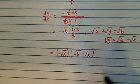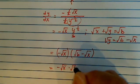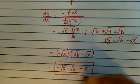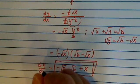One more step, then we're done. Radical x times radical b plus x. So here's my derivative dy/dx.